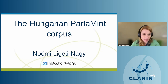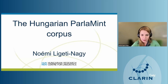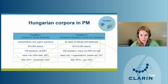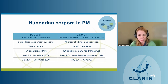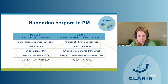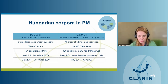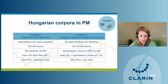I'm Noemi from the Hungarian Research Center for Linguistics, and I'll briefly present an overview of the Hungarian part of ParlaMint. The Hungarian corpus was also part of Phase 1, developed by the Center for Social Sciences, containing only interpolations and urgent questions of the assembly — approximately 870,000 tokens, 194 speakers who were all MPs, with basic demographic information and data from May 2014 to December 2020.